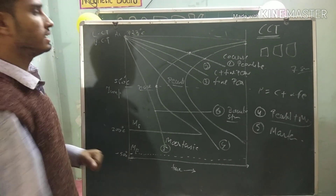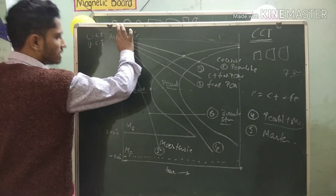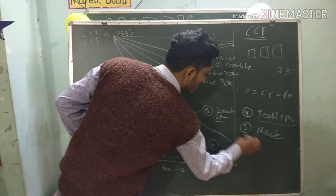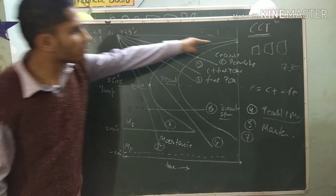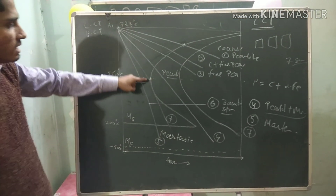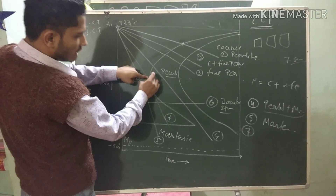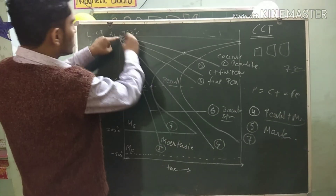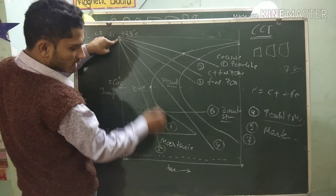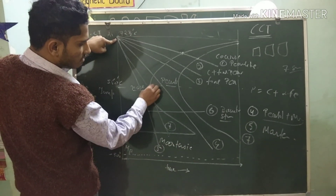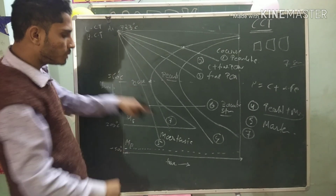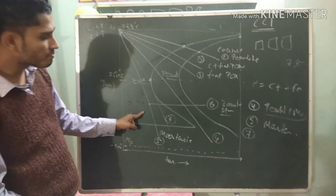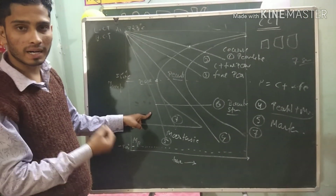Next is curve 7. This curve passes just by touching the nose of the CCT curve. After touching the nose, it passes to the outer region of the transformation. If the cooling rate is equal to curve 7, it will form pure martensite. If the cooling rate is faster than curve 7, it is also making pure martensitic structure. But if the cooling rate is slower than this, it will be an intermediate cooling rate and it will give pearlite plus martensite structure.